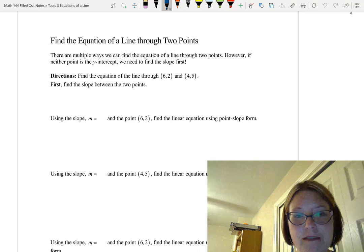We're going to find the equation of a line through the point (6,2) and the point (4,5) using several different methods.